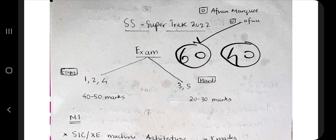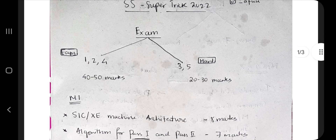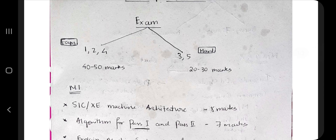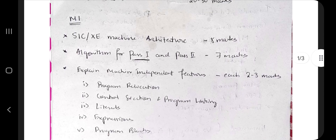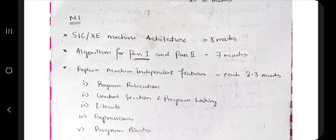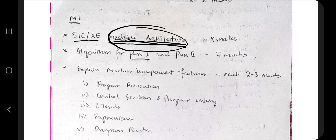Start from modules one, two, and four. In module one I have picked three important topics — these are the most repeated topics, repeated more than five times. The first is SICXE machine architecture. You cannot leave this because in machine architecture there are many things like the number of registers, what is the memory, and what are the different addressing modes. These are present in the notes.